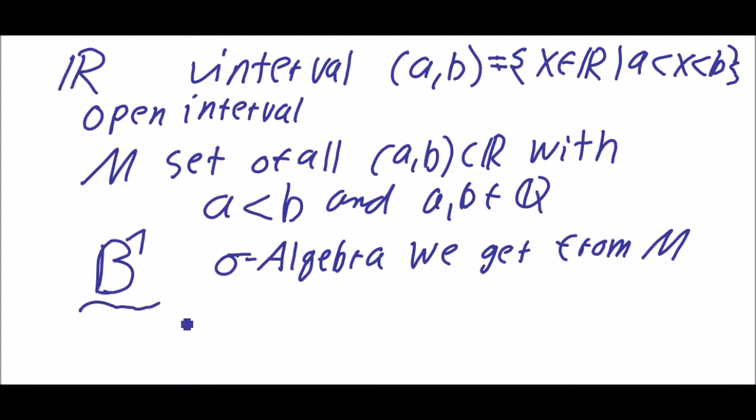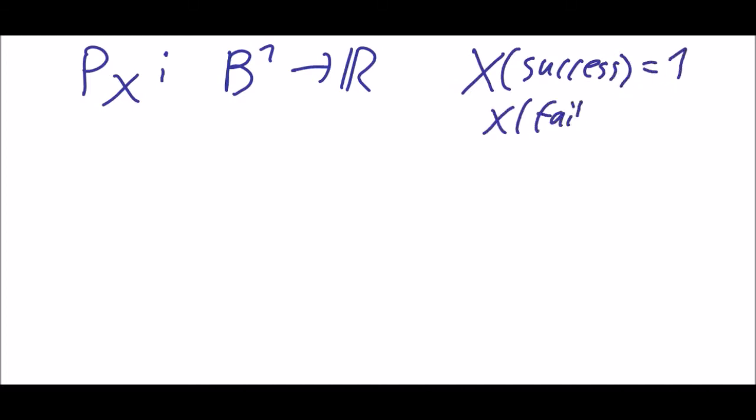So that will be interesting. So we want to have Px which goes from B1 to R. And we will have a look at Px. As you might know, X was defined with X of success as 1 and X of failure is 0. Of course success and failure are sets in F.